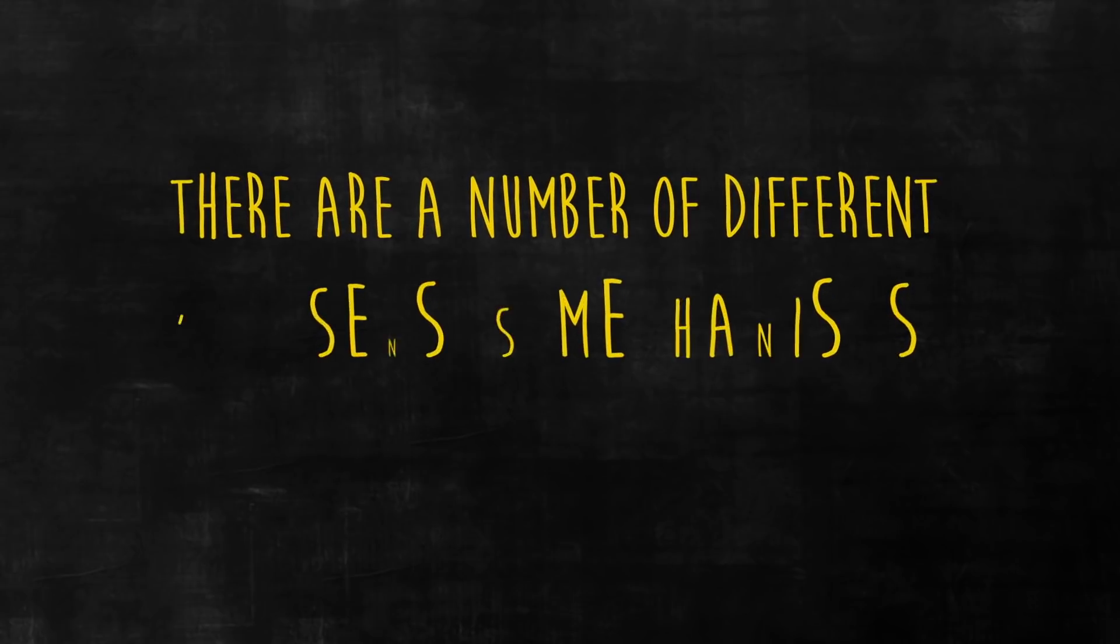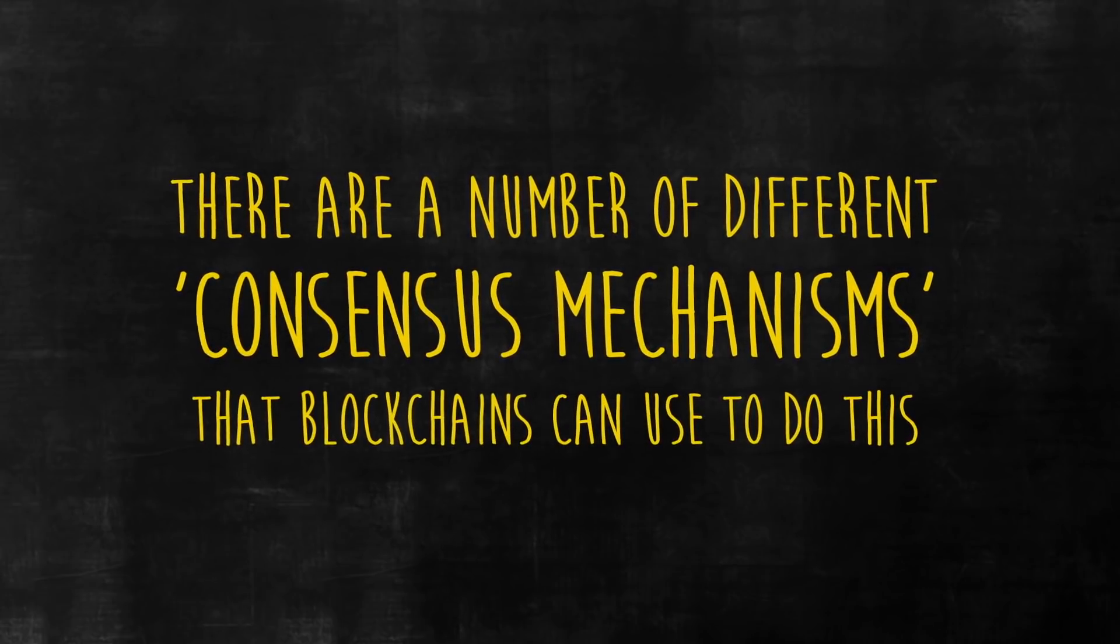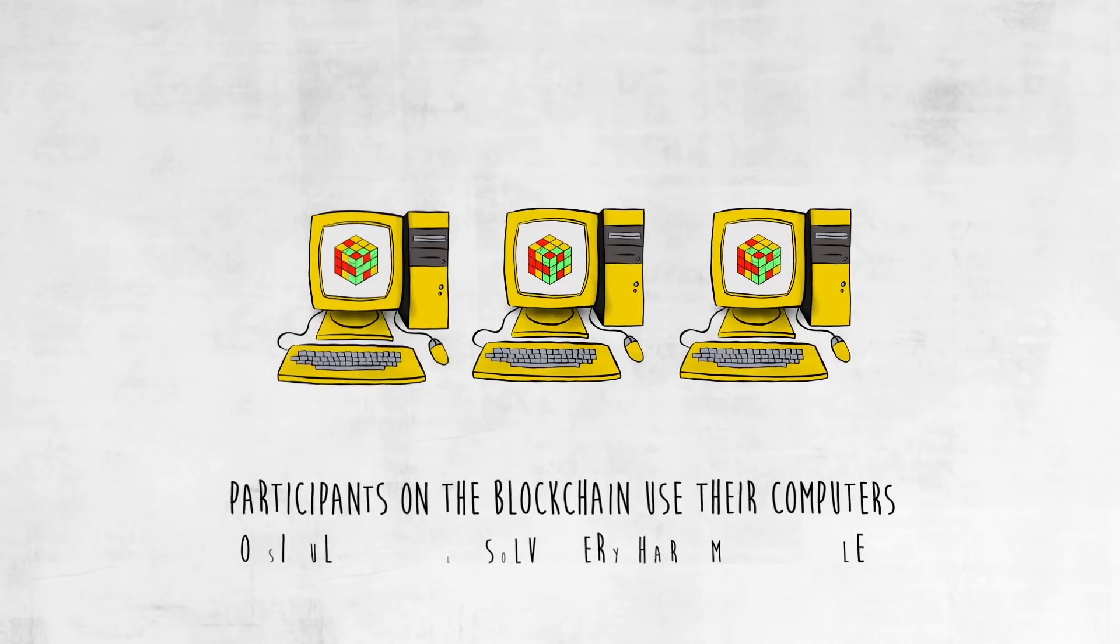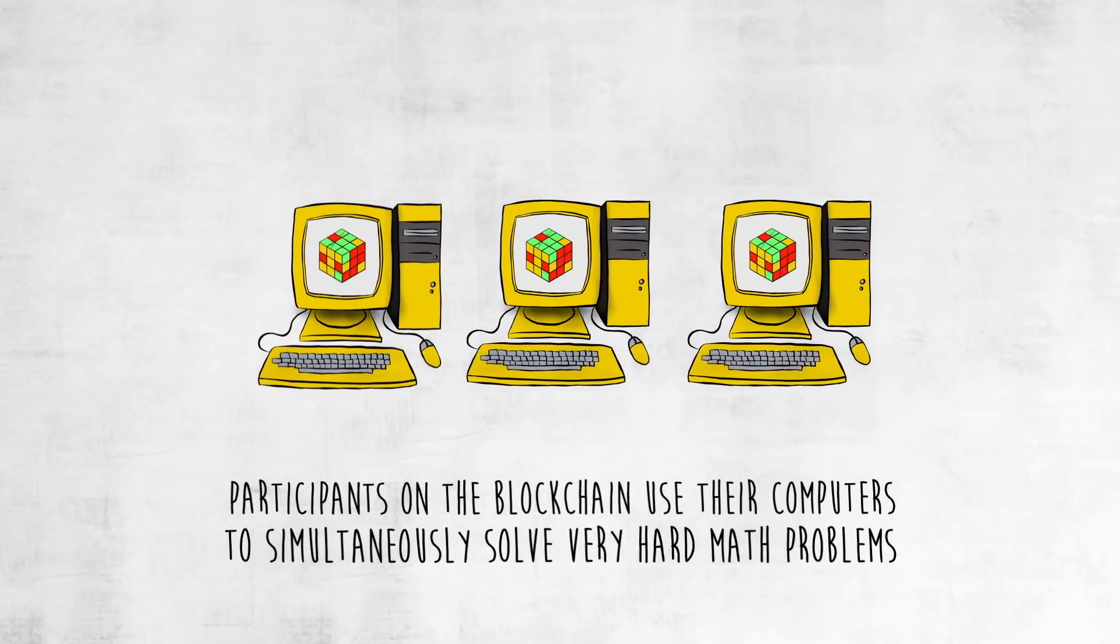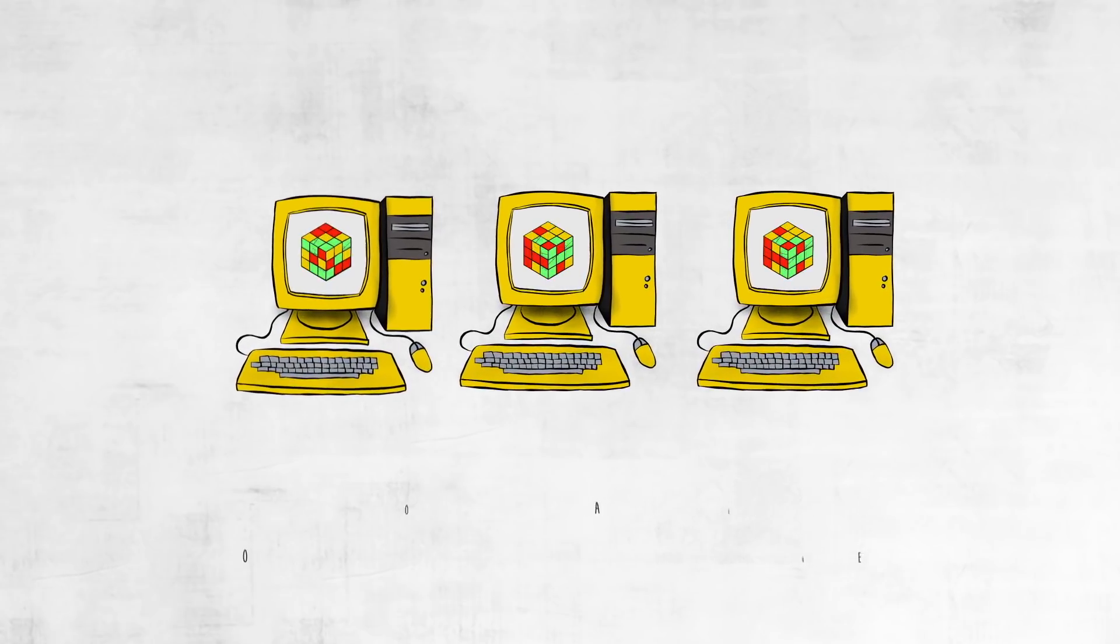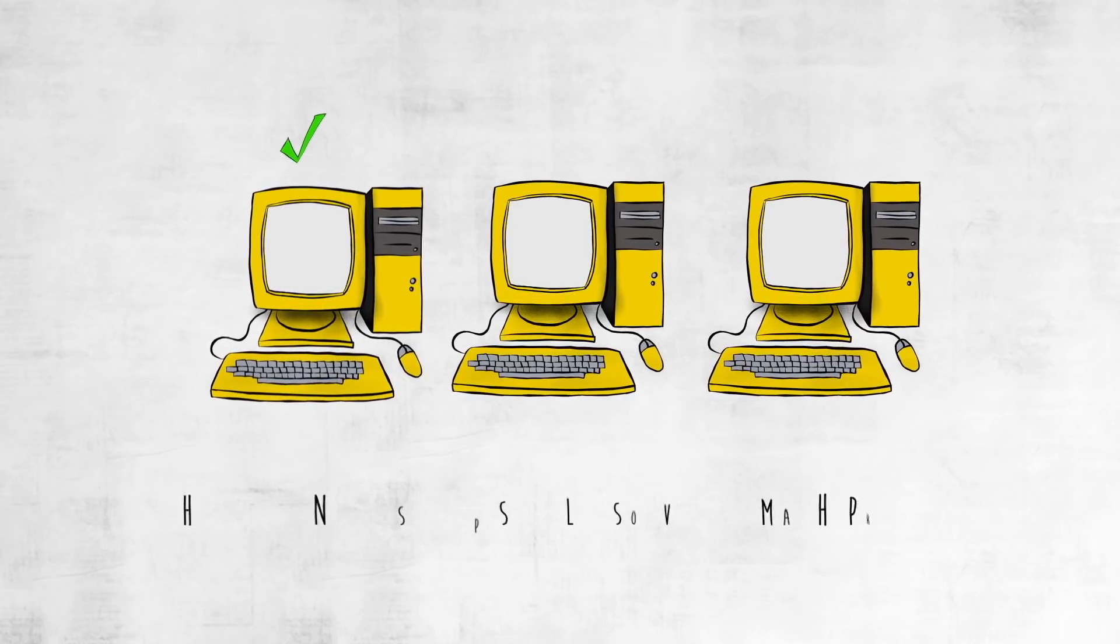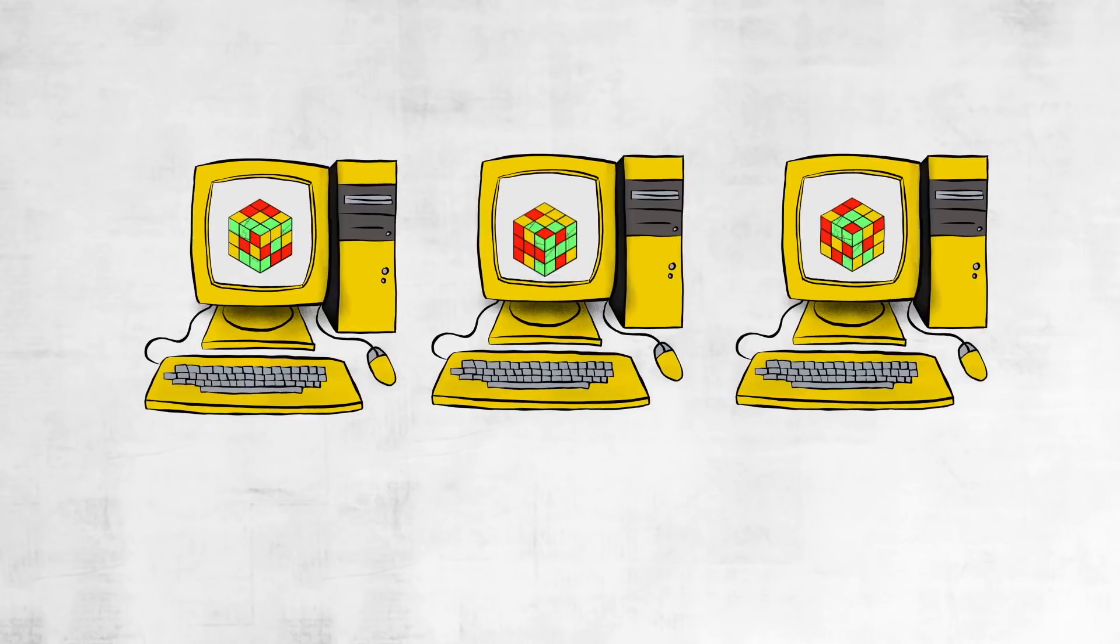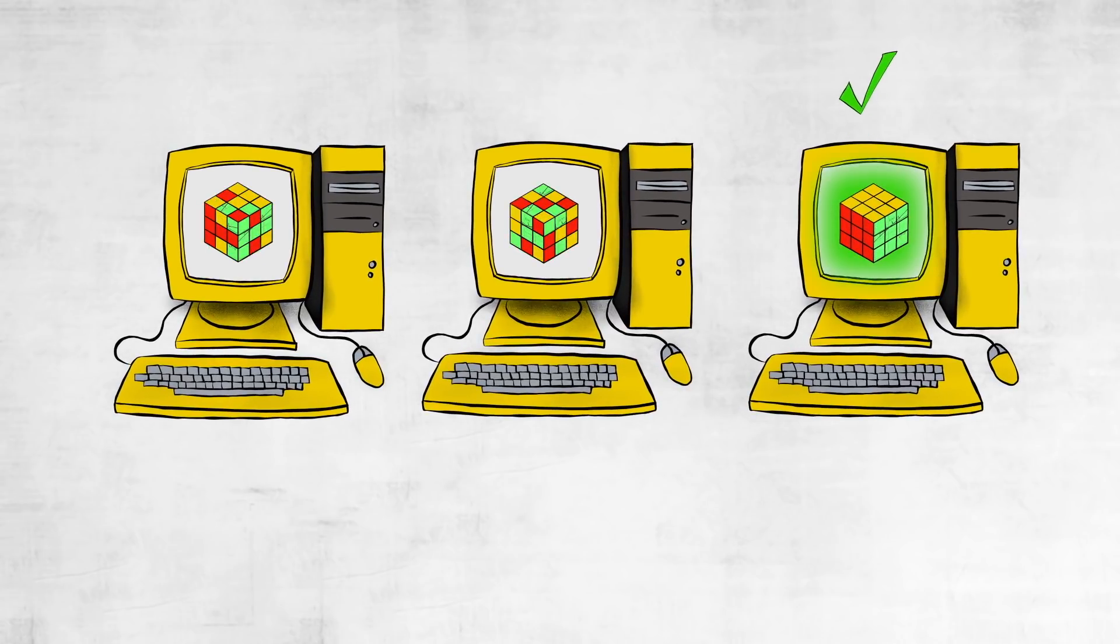There are a number of different consensus mechanisms that blockchains can use to do this. But to give you an idea of how consensus works, here are some of the broad strokes. Participants on the blockchain use their computers to simultaneously solve very hard math problems. When one node successfully solves a math problem, a new problem is generated, and all the computers on the network switch from solving the old problem to solving the new problem.